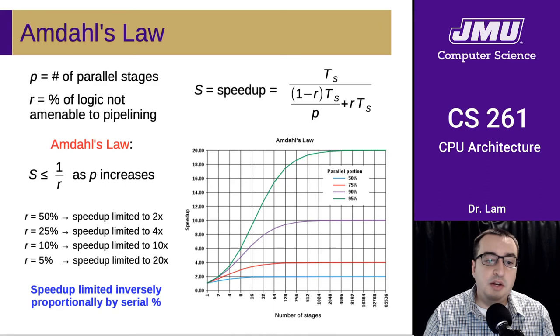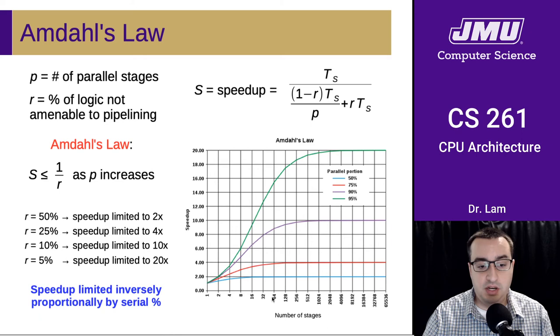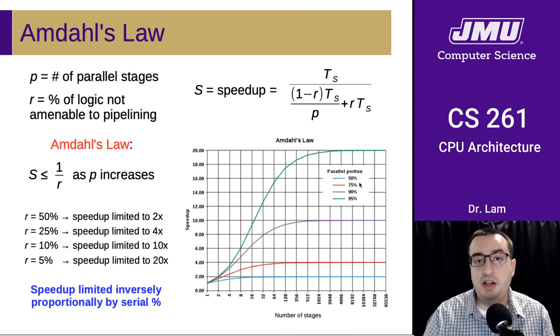And you can look at this graphically with this. So this is a graph from Wikipedia, and it basically shows the theoretical results for various values of R.